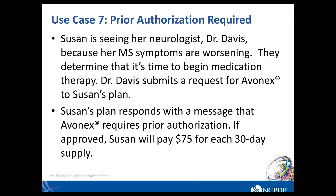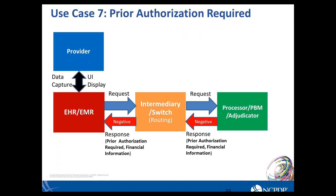Use case seven is prior authorization required. Susan sees Dr. Davis, a neurologist, as her MS symptoms are getting worse. They decide to start treatment and Dr. Davis submits a request for Avonex to her plan. The plan responds that prior authorization is needed, and that if approved, Susan would pay $75 for each 30-day supply. Depending on the product, this could also include information about a restricted pharmacy, such as for a specialty or limited distribution drug. The prior authorization message is required, and financial information is returned assuming the prior authorization is approved.